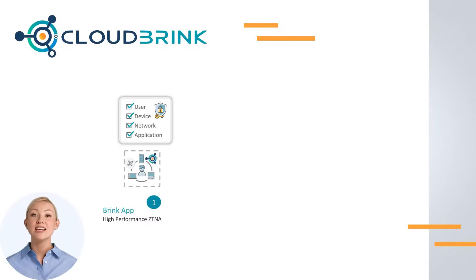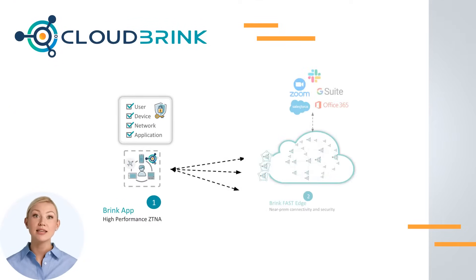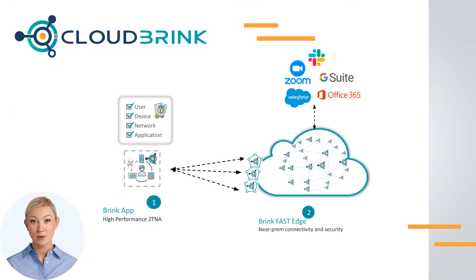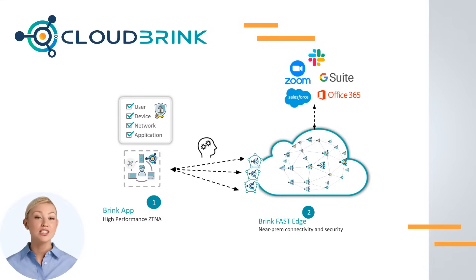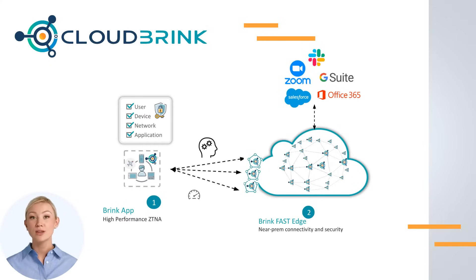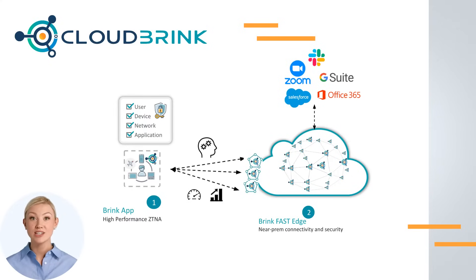The device then creates a secure overlay network connection into Cloud Brink's fast edge network. The overlay has built-in AI that learns the conditions of the end-user networks. Based on these conditions, we apply our own proprietary quality of experience that can overcome last-mile issues with packet loss, latency, or jitter.